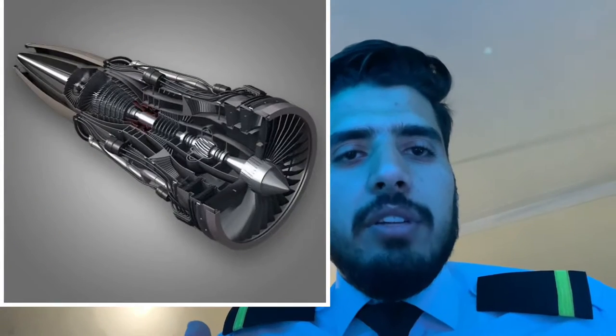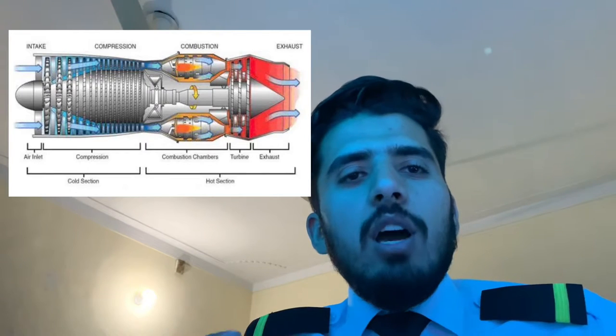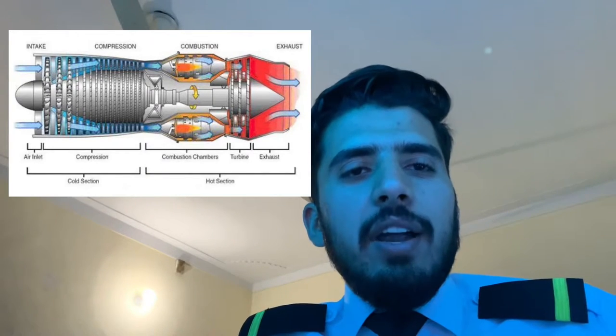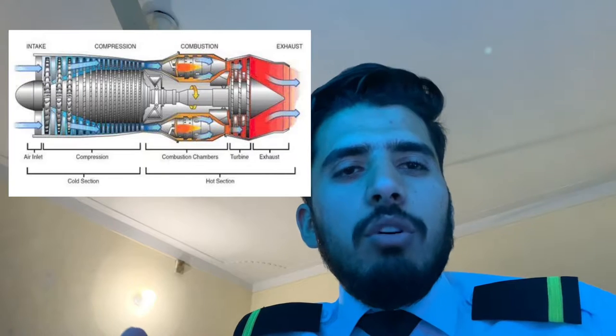Starting with turbojet engines — as understood from its name, turbojet engines are used for military aircraft. They are jet engines composed of two sections: a cold section and a hot section. The cold section consists of the inlet and compressor, while the hot section consists of the combustion chamber, turbine, and exhaust.